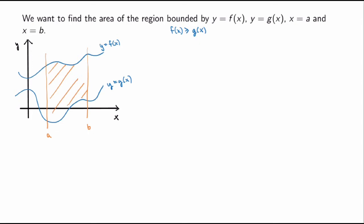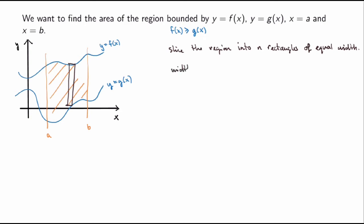What we're going to do is slice the region into n rectangles of equal width. That will first give us a good approximation of the area, and then we'll send the number of rectangles to infinity to get a precise calculation. I'm going to take the right point rule, so my rectangles are such that the right point, lower and upper, lie on the curves. The width is the same for each rectangle — delta x, which is b minus a over the number of rectangles. As for the height, looking at the rectangles, I see that the height will be given by f of x_i minus g of x_i, where x_i is the x-coordinate of the right endpoint of my rectangles.